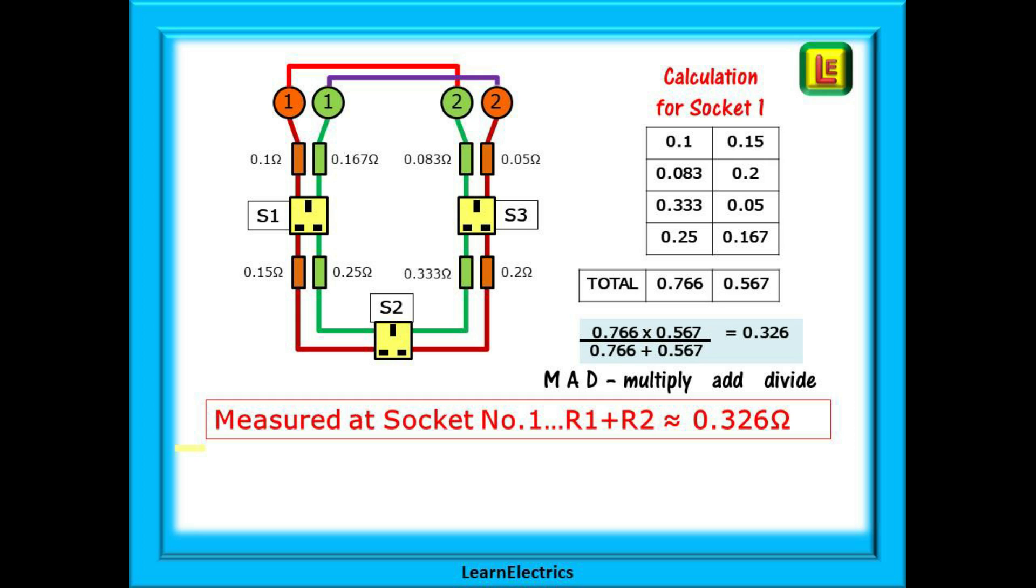But current can also flow down from S1 through the 0.15 ohm resistance, through the 0.2 and 0.05 ohm resistances, through the second of the links and then through the 0.167 ohm resistance to end up at S1. This is what is known as a parallel network and we deal with it in this way. If we add each column we will get 0.766 ohms and 0.567 ohms.